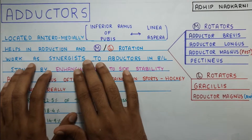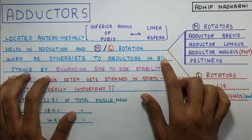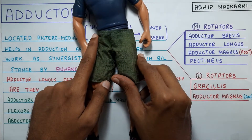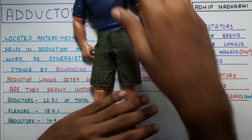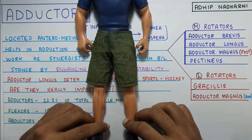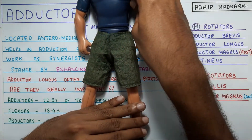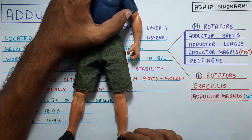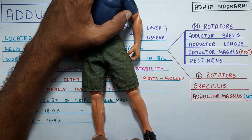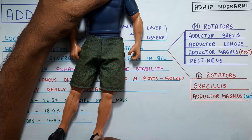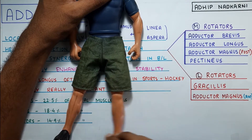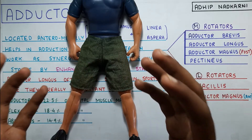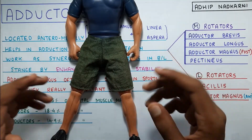The adductors also work as synergists to abductors in bilateral stance by enhancing side-to-side stability. For example, when Joe is standing and shifting his weight from leg to leg, he is abducting one leg and adducting the other. This synergistic movement in bilateral stance is carried out by the adductors and abductors working together in synchrony to provide stability and enhance side-to-side movement.